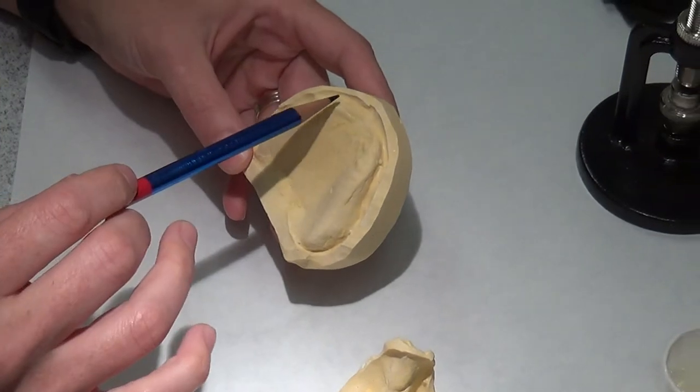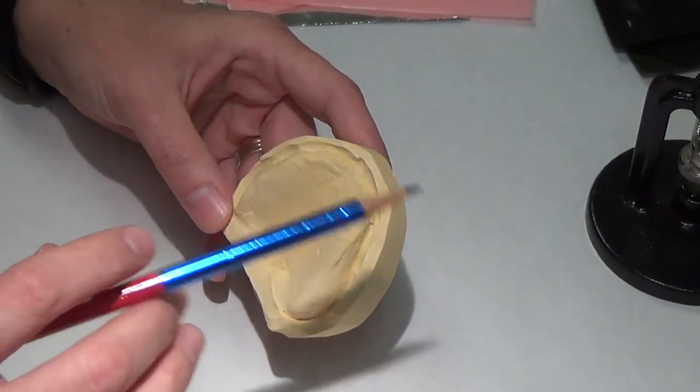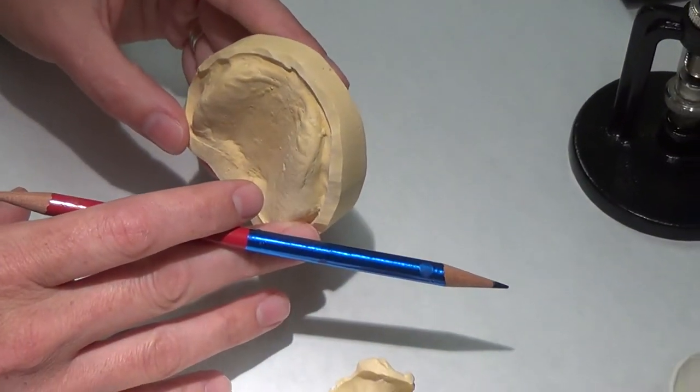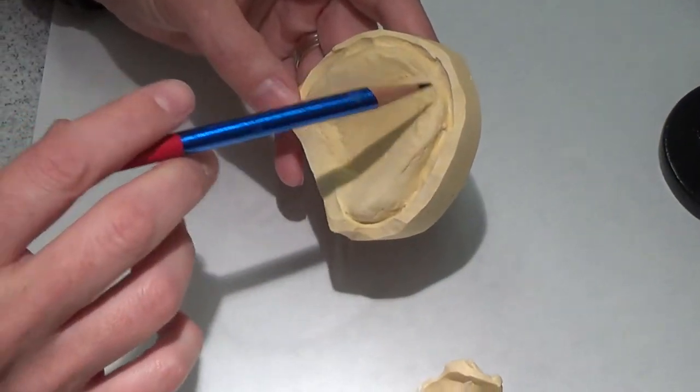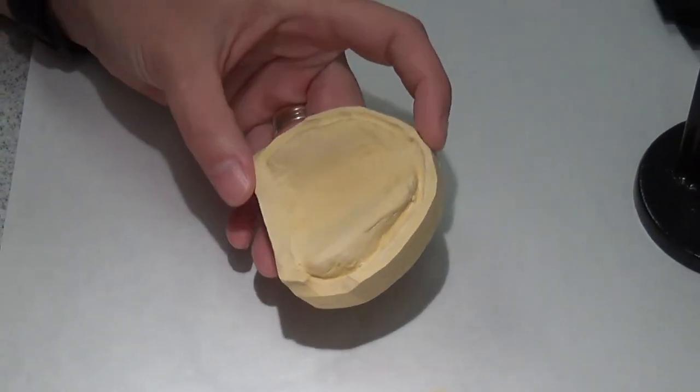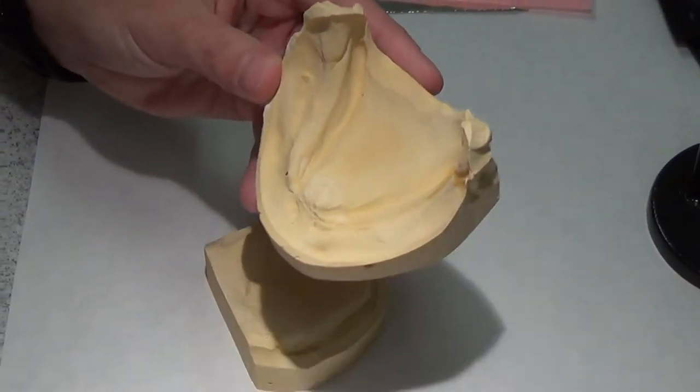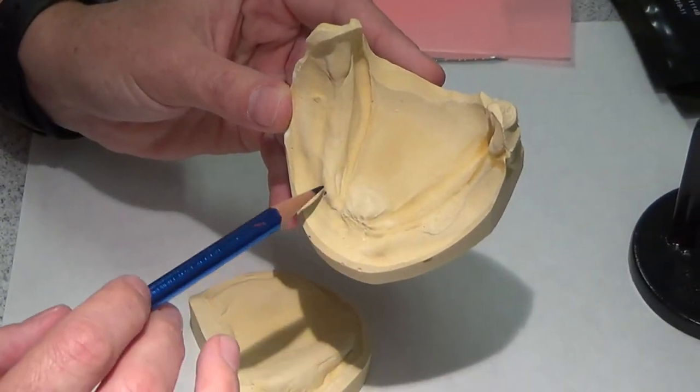She has a lot of resorption in this anterior pre-maxilla area. It's super flat, not a whole lot of attached tissue. On the mandible she actually has no attached tissue in this area right here. It's just mucosa continuous.